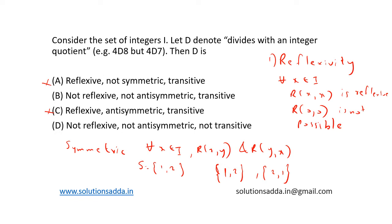So let's see the next option, that is anti-symmetric. In anti-symmetric, we can say that for all x belongs to I, R(x,y) and R(y,x) implies that x equals y is said to be anti-symmetric.